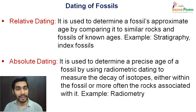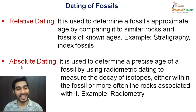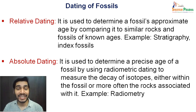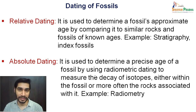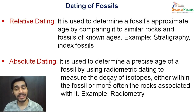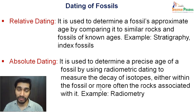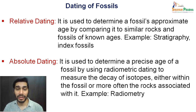Under relative dating methods, you can have stratigraphy or index fossils as examples. We will discuss those in detail shortly, but let's quickly compare relative dating with absolute dating. In absolute dating, a precise age of the fossil is determined using radiometric dating methods. This involves the study of decay of isotopes either directly in the fossil itself or in the rocks associated with it.